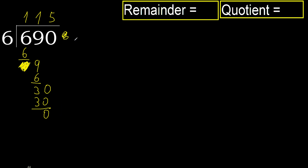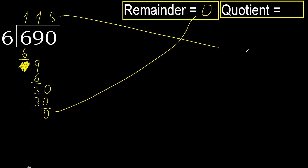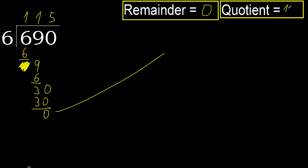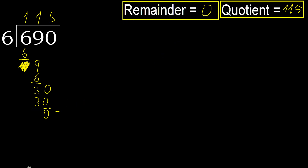That is not a number, therefore finish it. 690 divided by 6 is 115.